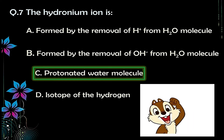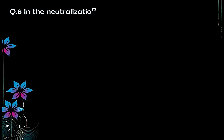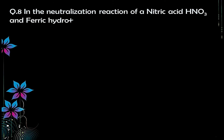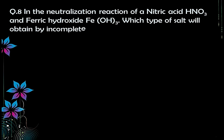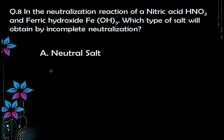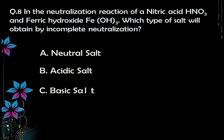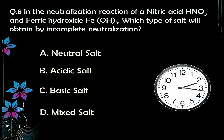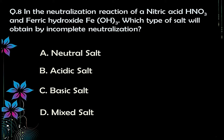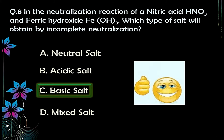Question number eight: in the neutralization reaction of nitric acid HNO₃ and ferric hydroxide Fe(OH)₃, which type of salt will be obtained by incomplete neutralization? Options: A) neutral salt, B) acidic salt, C) basic salt, D) mixed salt. If you have watched my video on salts and their types, you can easily answer this. The correct answer is option C — basic salt.